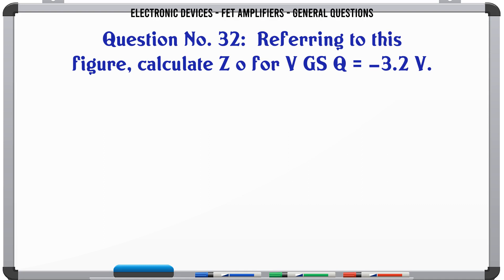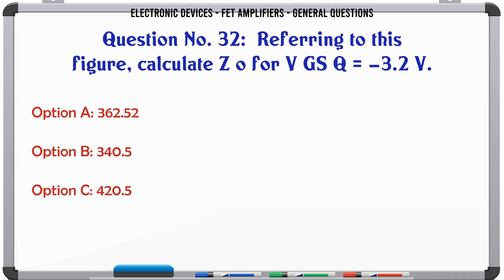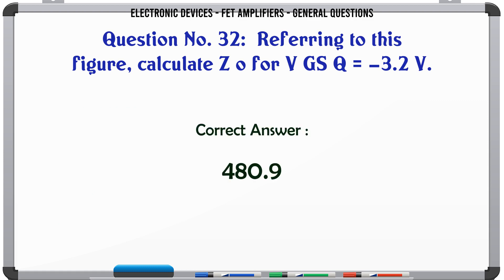Referring to this figure, calculate ZO for VGSQ = 3.2V. A. 362.5Ω. B. 340.5Ω. C. 420.5Ω. D. 480.9Ω. The correct answer is 480.9Ω.